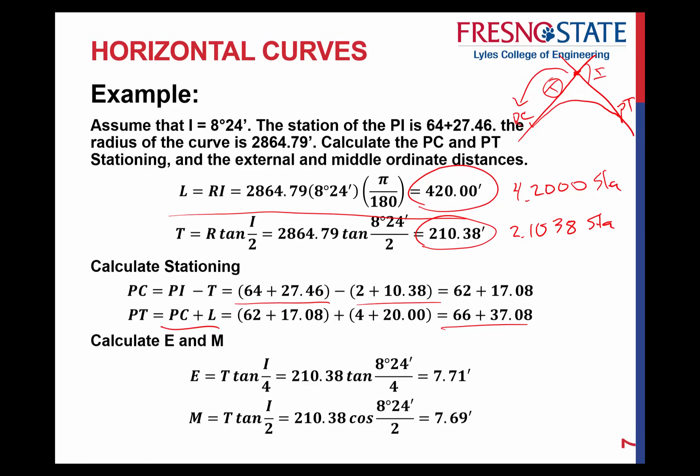That's how we calculate different parts of this curve. One important thing to keep in mind: this curve was defined using a radius R and intersection angle I — those two values define the horizontal curve. The PI gives us the reference for stationing. You could alternatively be given the degree of curve instead of the radius; if so, calculate the radius first and then proceed with the rest of the formulas.